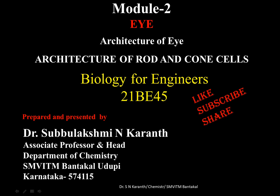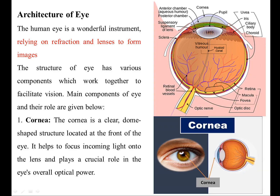In this video, I'll discuss the architecture of the eye as well as the architecture of rod and cone cells. The human eye is a wonderful instrument relying on refraction and lenses to form images. The structure of the eye has various components which work together to facilitate vision.